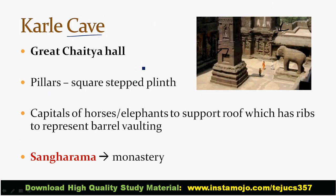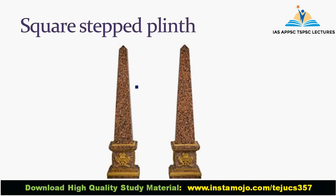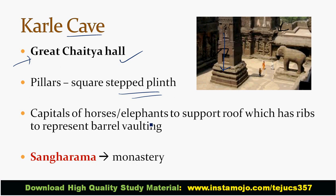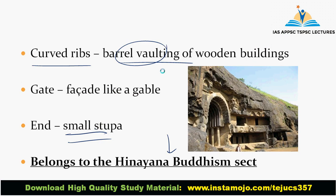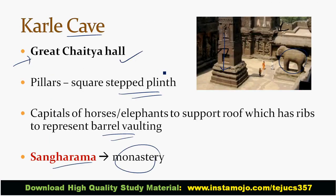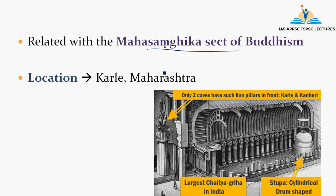Next is Karle Cave, which has a great gable facade. The pillars have a square cross-section. The capitals feature horses and elephants, mainly to support the roof. The ribs represent the barrel vaulting. Importantly, Karle Cave is associated with the Mahasanghika sect of Buddhism. Its location is Karle, Maharashtra.